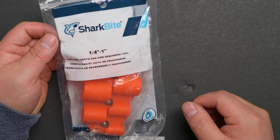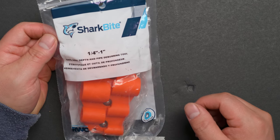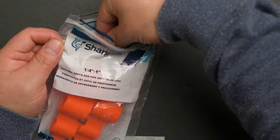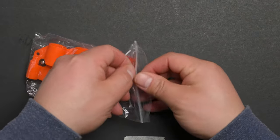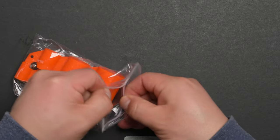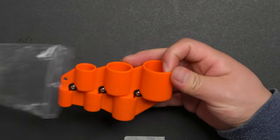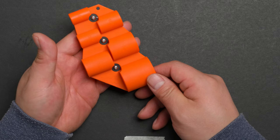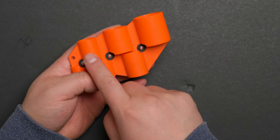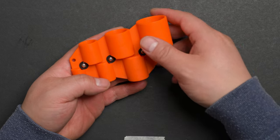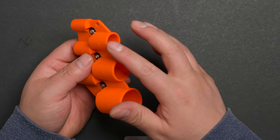This is the SharkBite safe seal depth and pipe deburring tool. This tool is for use with copper tube. You can clearly see the sizes: half inch, three quarter, one inch, and this is the depth mark.